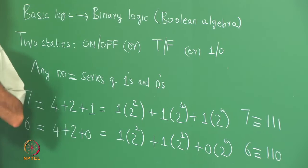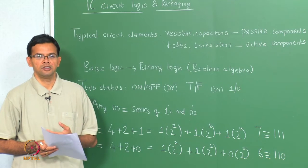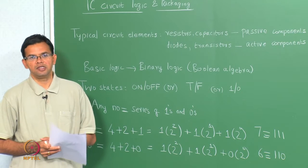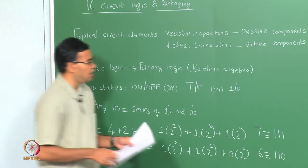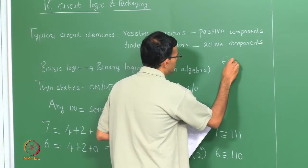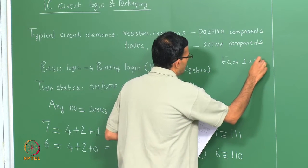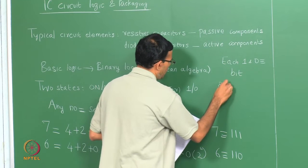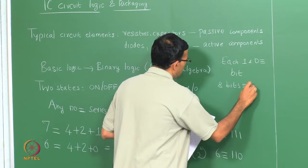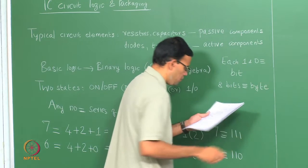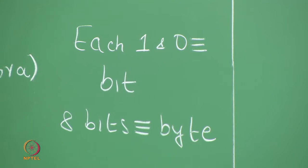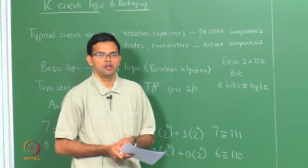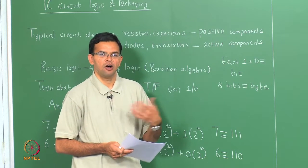Essentially anything can be broken down into 1s and 0s which represent on and off states, and these can be represented by voltage fluctuations. Each 1 and 0 is called a bit and 8 bits come together to make a byte. There are higher orders as well: kilobytes, megabytes, gigabytes and so on, which all represent higher orders of these bits.